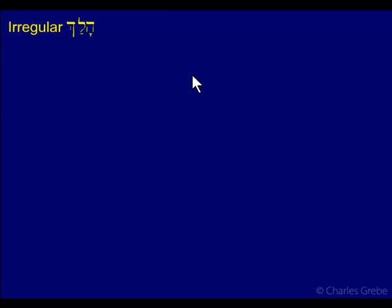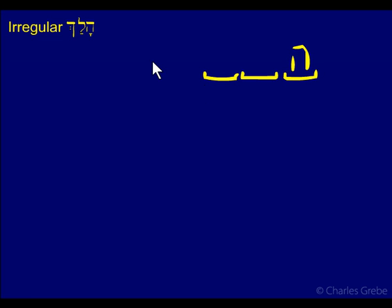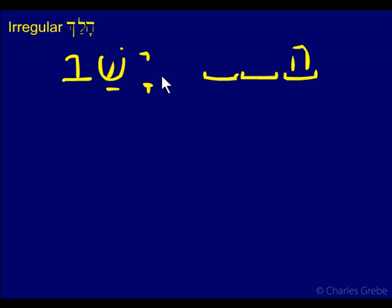Irregular Halakh. Now we need to talk about Halakh. Halakh is a verb that starts with He, but it behaves as if it is starting with a Yud — it behaves like Yashav. We see the Yud there, but it's really a first-Vav, so Halakh is behaving as if it is a first-Vav, like Yashav. We've seen this before; we saw this with Lakakh.